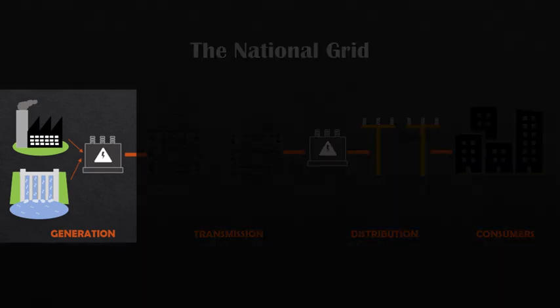Electricity in South Africa is generated from coal and hydroelectric power stations. Once the power is generated, it is stepped up to a higher voltage level to reduce losses and increase the efficiency of the grid. This is achieved using a power system equipment known as the transformer.